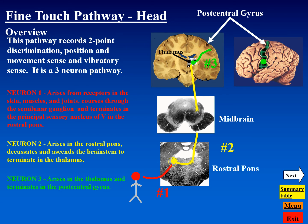This is an overview of the fine touch pathway involving the head region. It is also a three-neuron pathway, with the trigeminal nerve being the primary cranial nerve transmitting this information. The cell body of neuron one is found in the semilunar ganglion. Neuron two has its cell body in the principal sensory nucleus at the pontine level, and its axon ascends to terminate in the thalamus. Neuron three then projects from the thalamus to the postcentral gyrus.